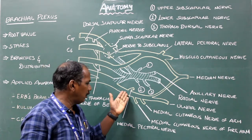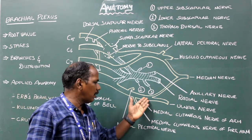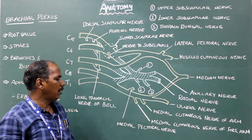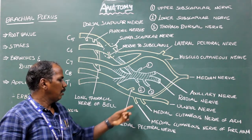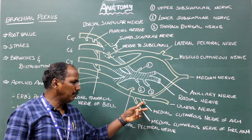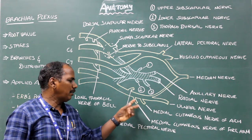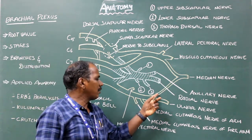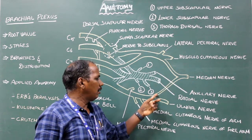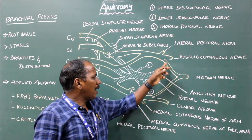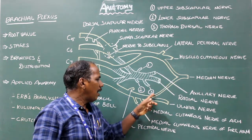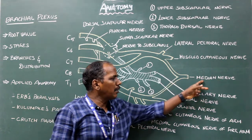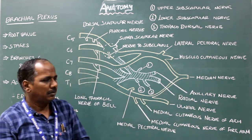Branches from the medial cord: medial pectoral nerve, medial cutaneous nerve of arm, medial cutaneous nerve of forearm, and medial root of median nerve. The lateral root of median nerve and the medial root of median nerve join to form the median nerve.